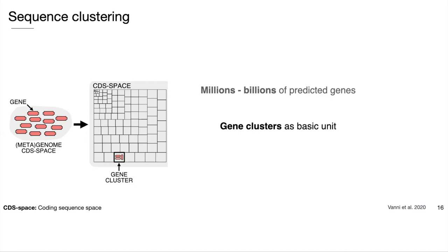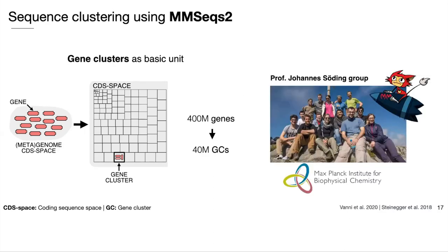This left us with no margin of error and no possibility to test or tune different clustering parameters. We were fortunate to begin working in collaboration with Johannes Söding's group from the Max Planck Institute for Biophysical Chemistry in Göttingen. This team develops tools that can handle large amounts of data. Thanks to MMseqs2, developed by Martin Steinegger, we were able to cluster 400 million genes down to 40 million gene clusters in less than one day.